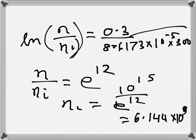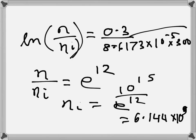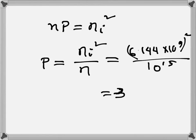Now we need to use law of mass action, which is np is equal to NI squared, to find the value of P. So this is NI squared divided by N, that is 6.144 times 10 to the power 9 whole squared divided by 10 to the power 15, and this gives me 3.77 into 10 to the power 4.